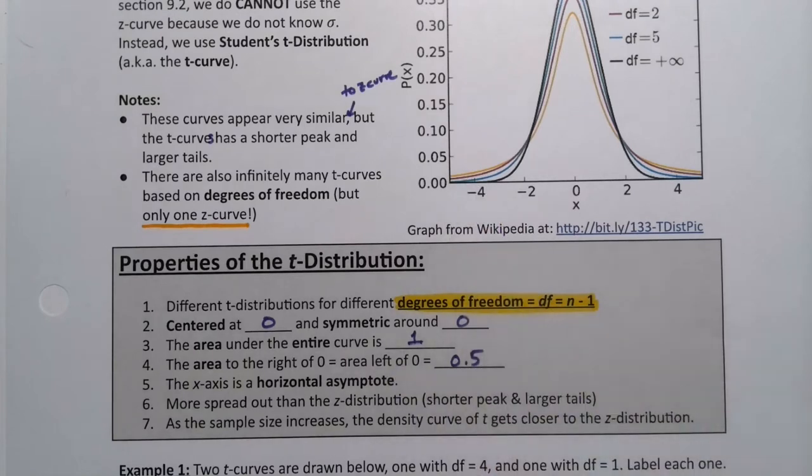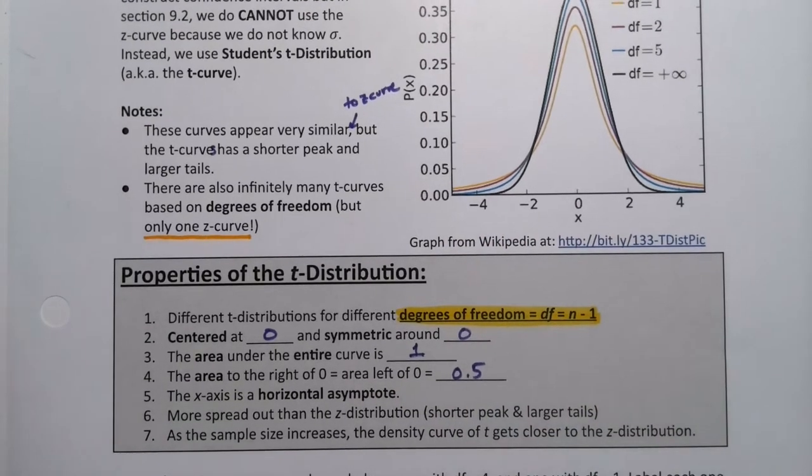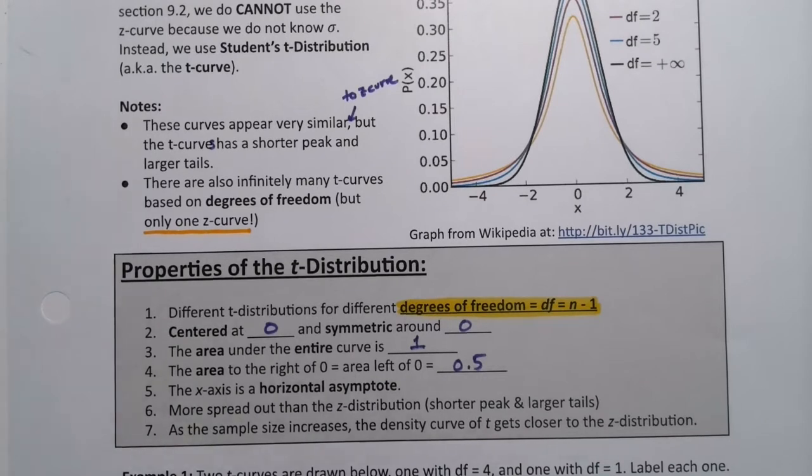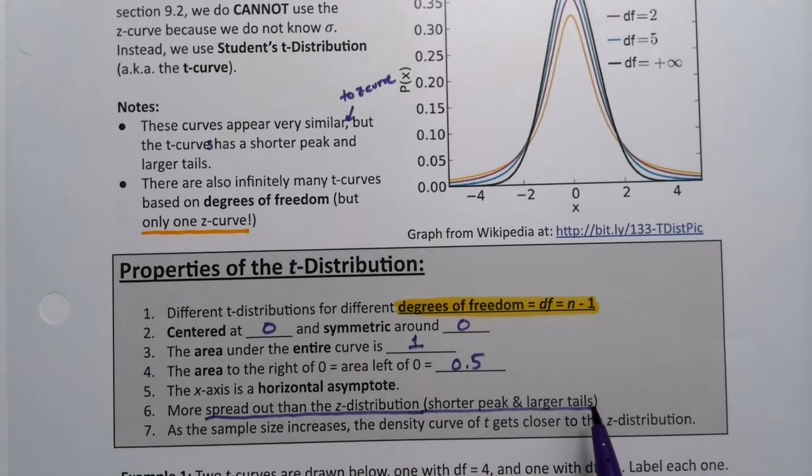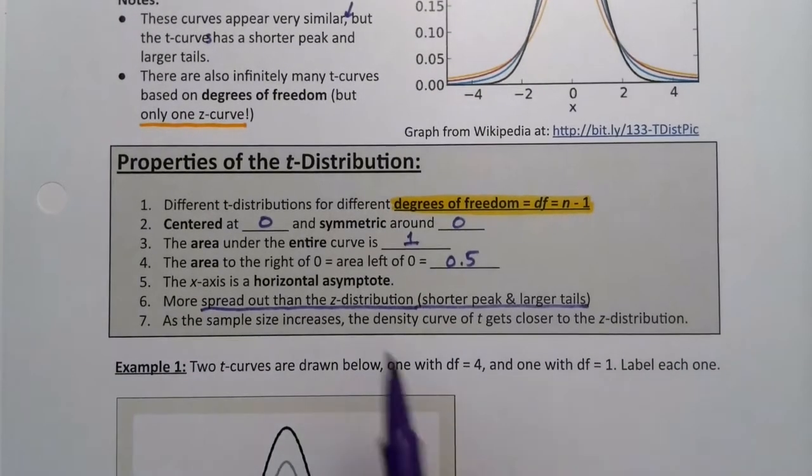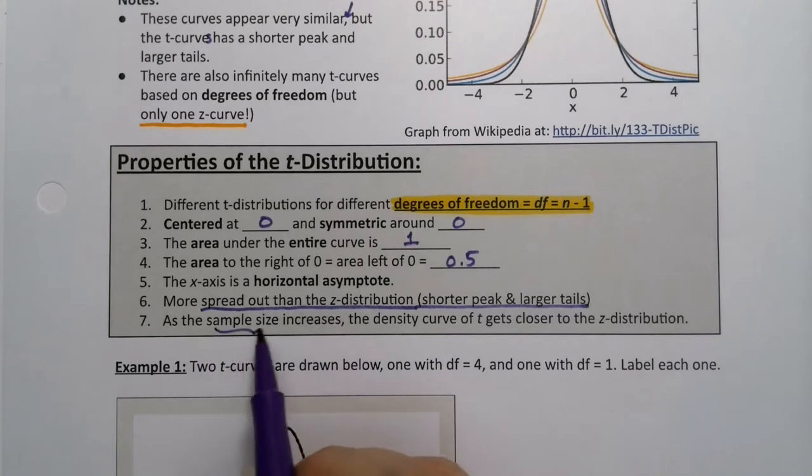The x-axis is a horizontal asymptote. You can see the curves are getting closer and closer to that x-axis but never touching it. And really important, it's more spread out than the z distribution. It has a shorter peak and larger tails. As the sample size increases, as n increases, your sample size increases.